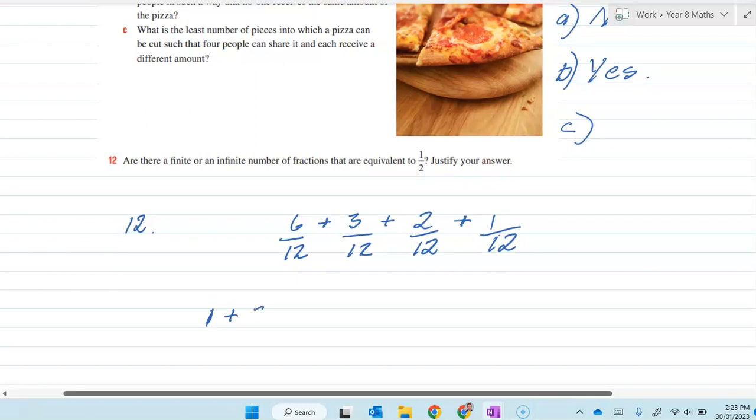Then the next person gets two pieces. Then the next person gets three pieces. And the next person gets four pieces. So we've each got an equal size piece, but what have we got?